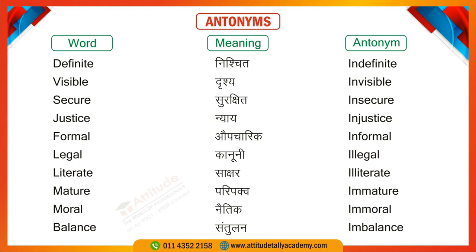Next one is 'Literate,' meaning someone who can read and write. We call an educated person literate, and this ability is called literacy. 'Illiterate' means someone who cannot read and write. You can say: There are many illiterate people in India, which is unfortunate but is the bitter truth. Next one is 'Mature,' meaning fully developed. For example: She is a mature girl. 'Immature' — children are immature.